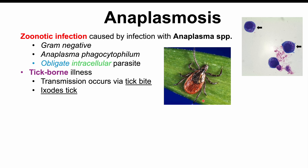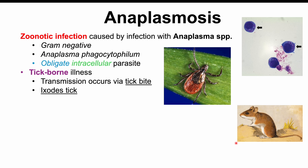A tick might harbor one or multiple infective organisms, leading to different infections — anaplasmosis, Lyme disease, babesiosis, and others. The main animal reservoir for anaplasma bacteria is the white-footed mouse, and we can also see it with white-tailed deer.